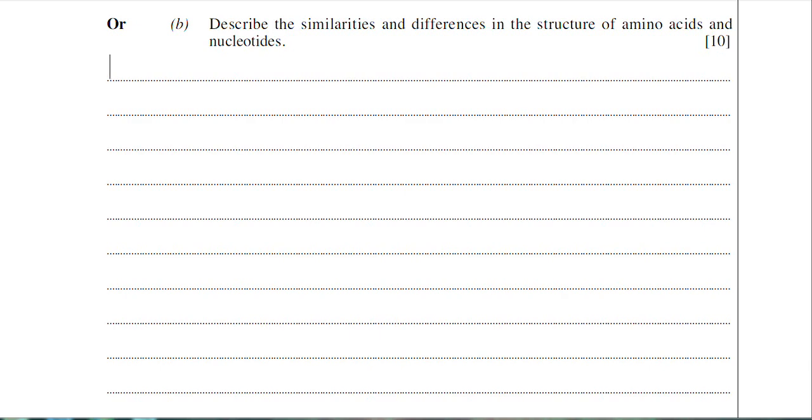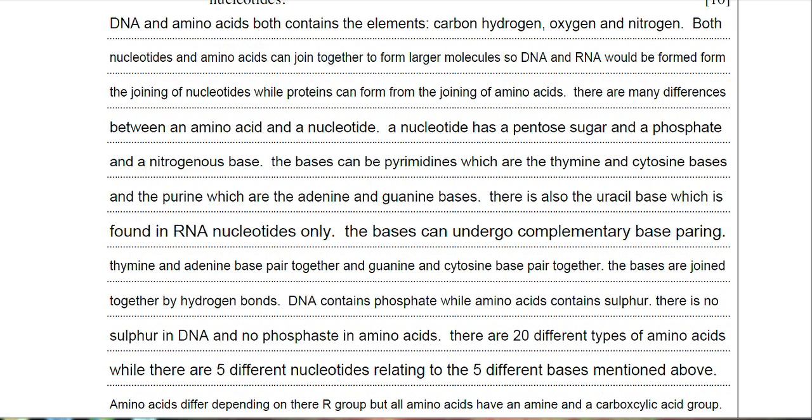There are lots of other differences that we can write down. I'm going to write out an answer for you. We'll go through it and look at the marking scheme as well. I've written out an answer for this question now. I've started off by stating some similarities. I've talked about them all containing carbon, hydrogen, oxygen and nitrogen, as well as the nucleotides and amino acids being able to join together to form larger molecules. I've stated that you actually make DNA and RNA from the nucleotides and you'd get proteins from the joining of amino acids. That is pretty much all the similarities between them.